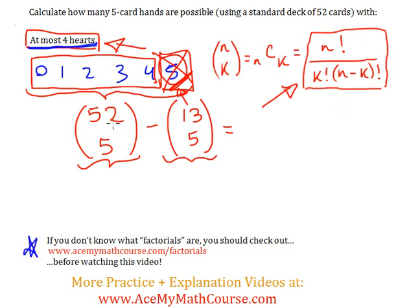And fifty-two combination five works out to be two million five hundred and ninety-eight thousand nine hundred and sixty. So, there are these many possibilities for five card hands if you're drawing the cards from a standard deck of fifty-two cards.